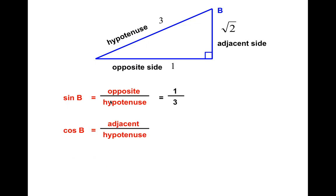Next, the cosine of B is adjacent over hypotenuse. So adjacent is the square root of 2. Hypotenuse is 3. So it's the square root of 2 over 3.